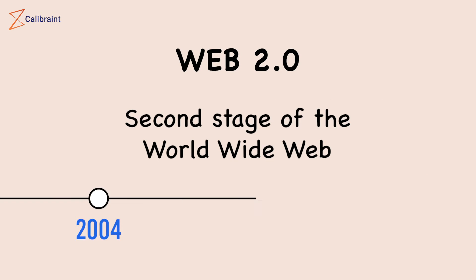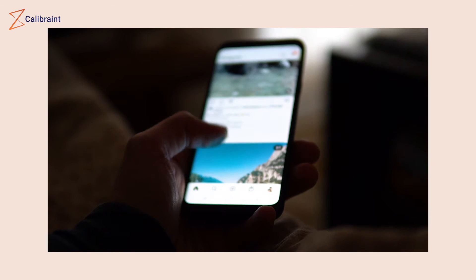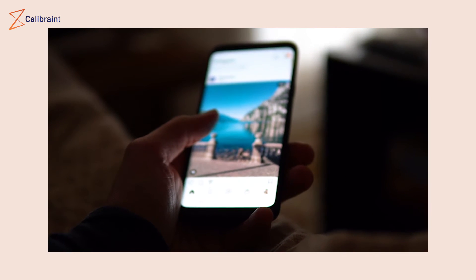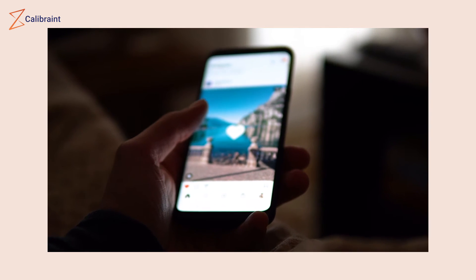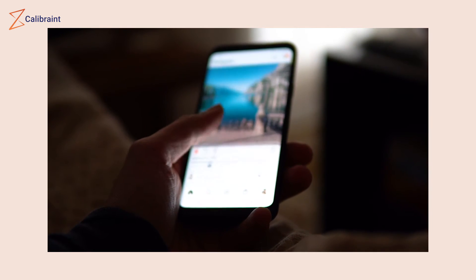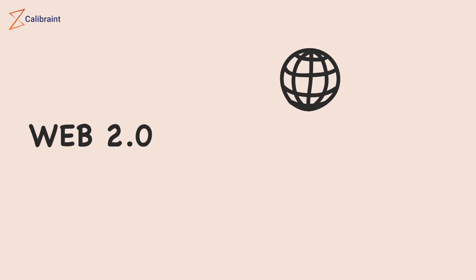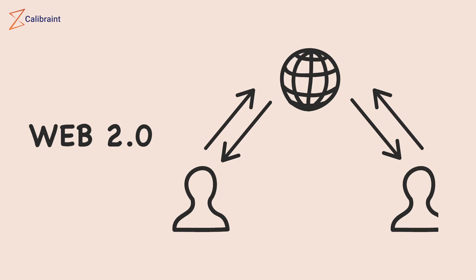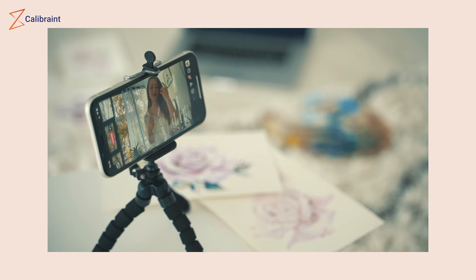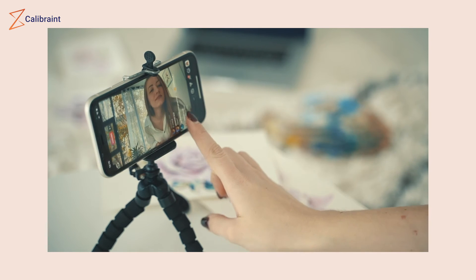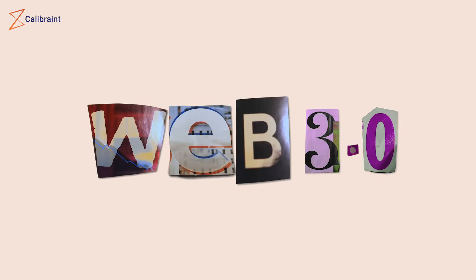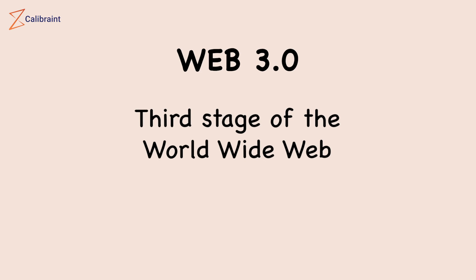Web 2.0 refers to the second stage of the worldwide web evolution, from 2004 to present. It consists of dynamic pages which are generated on the fly based on user input or interaction. It is a participative social web which allows users to interact and collaborate in a social media dialogue as creators of user-generated content in a virtual community.